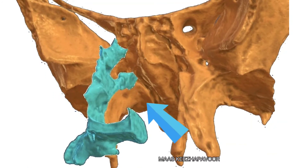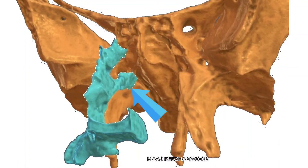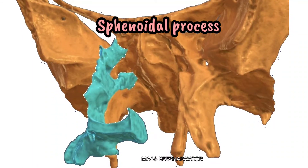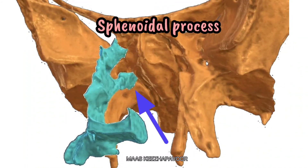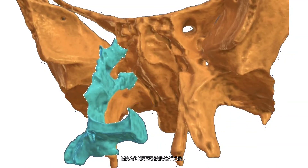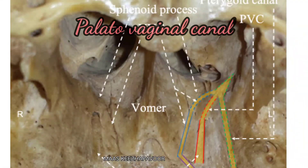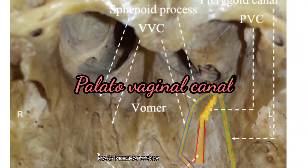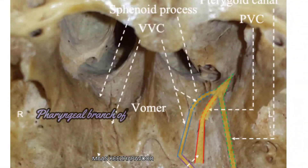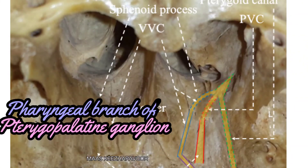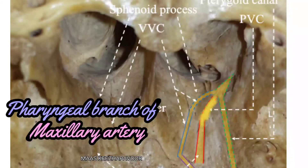An expansion projects medially from the perpendicular plate of the palatine bone called the sphenoidal process, which overlaps the vaginal process. An anterior-posterior groove is seen in both the sphenoidal process of palatine bone and the vaginal process of medial pterygoid plate. These two grooves together form a canal called the palato-vaginal canal, through which the pharyngeal branch of the pterygopalatine ganglion and the pharyngeal branch of the maxillary artery pass.